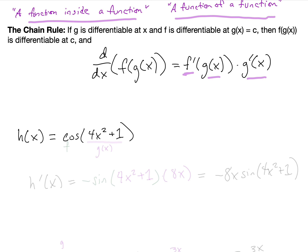For h of x equals cosine of 4x squared plus 1, the 4x squared plus 1 is our inside function — this is our g of x — and cosine of x is our f of x. So when we take the derivative, h prime of x equals the derivative of the outside function. The derivative of cosine is negative sine of — and then we leave the inside function alone, so this is still just 4x squared plus 1 — and then we multiply by the derivative of the inside function, which is 8x. We can rewrite that as negative 8x sine of 4x squared plus 1.